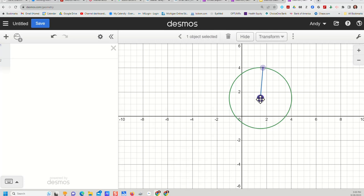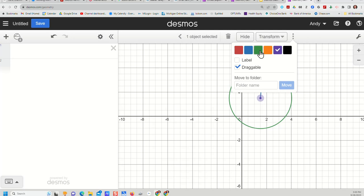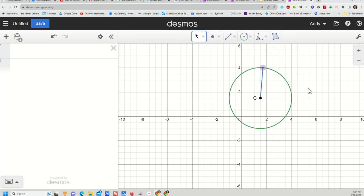And again I can click on a point, I can style it differently, I can make my center point a different color, maybe I want it black and maybe I want to put a label and maybe I want to call it C for center. So here's my center point, I can choose to make it not draggable, let's see what happens if it's not draggable.